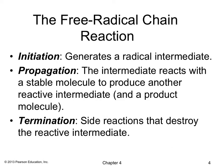The free radical chain reaction involves three steps: initiation, propagation, and termination. Initiation generates a radical intermediate. In propagation, the intermediate reacts with a stable molecule to produce another reactive intermediate as well as a product molecule. Termination is a side reaction that destroys the reactive intermediate.